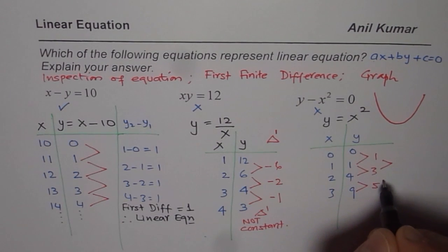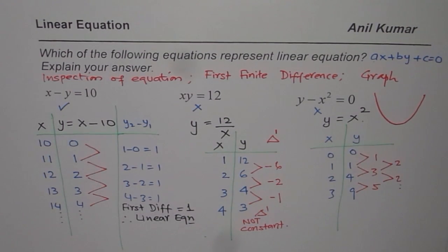However, you will find that the second difference will be 3 minus 1, 2, 5 minus 3, 2 constant. So it is quadratic. That is how you can figure out whether the equations are linear or not.